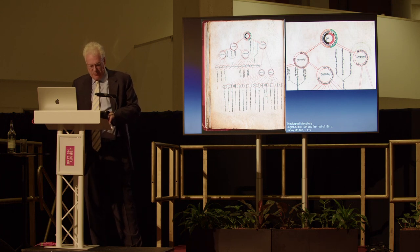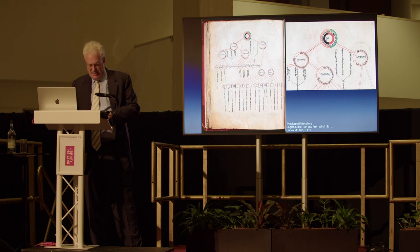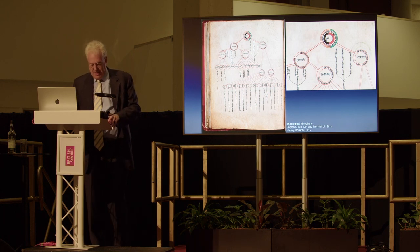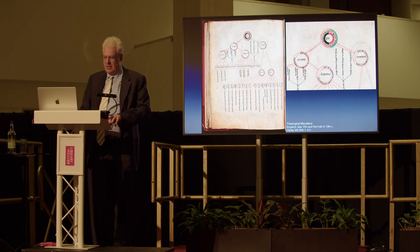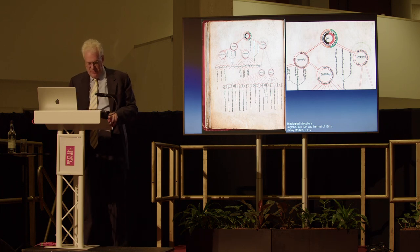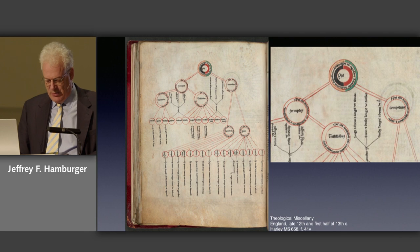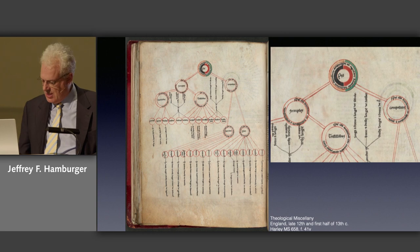And not only in the rather literal-minded way documented by this detailed diagram, which descending from the top, labeled pes or foot — the measure of poetic meter — breaks down the various types of poetry according to the classification provided by Donatus, the mid-4th century grammarian who was the tutor to Jerome, the patron saint of philologists.